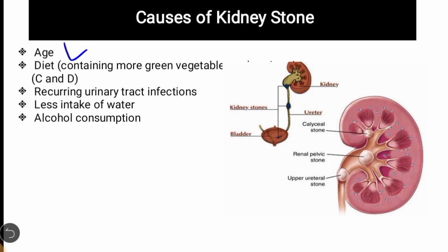پالک (spinach) میں salts کی concentration زیادہ ہوتی ہے۔ یہ salts جا کر uric acid cause کرتے ہیں، یعنی kidney stone cause کرتے ہیں۔ پالک، tomato — یہ چیزیں kidney stone cause کر سکتی ہیں۔ تقریباً تمام vegetables میں vitamin D اور C موجود ہوتا ہے۔ اس کے علاوہ kidney stones urinary tract infections بھی cause کرتے ہیں۔